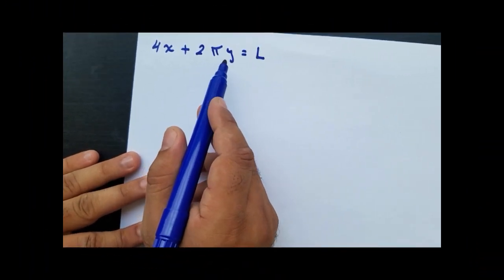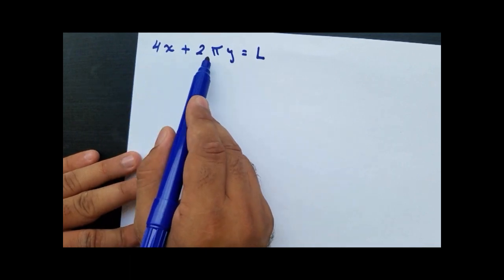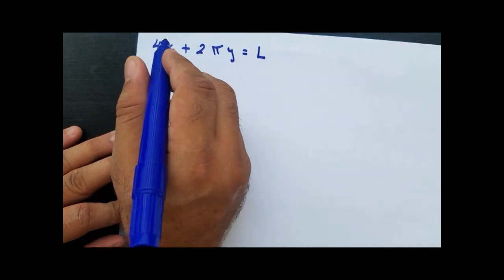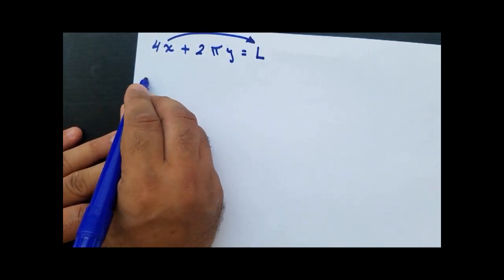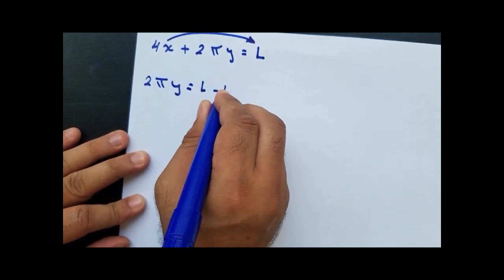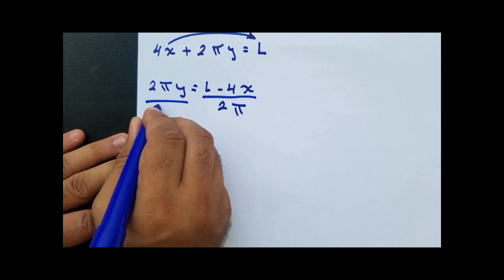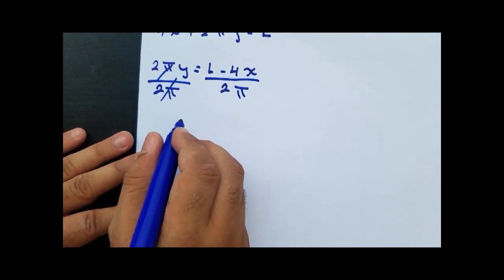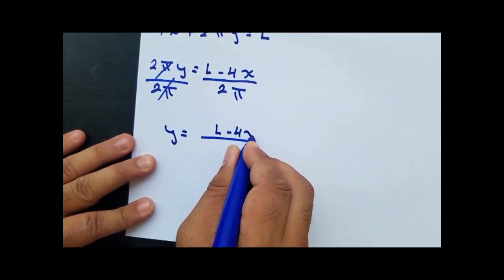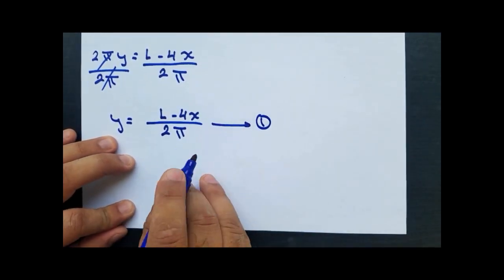Since the rope forms the circle and the square, we can say that the square perimeter 4x plus the circle circumference 2πy equals L. If we want to find y, we transfer x to the other side, leaving us with 2πy equals L minus 4x. Dividing both sides by 2π, we get y equals (L minus 4x) all over 2π. We name this equation number 1.